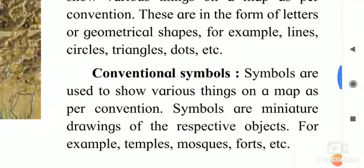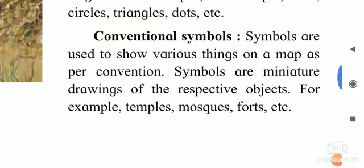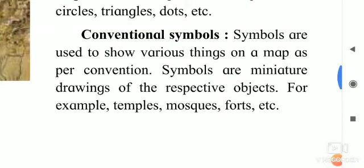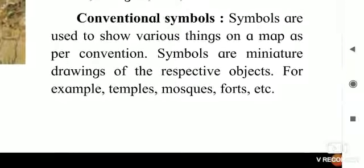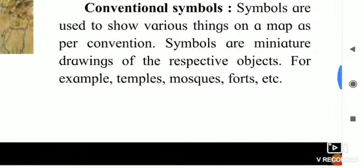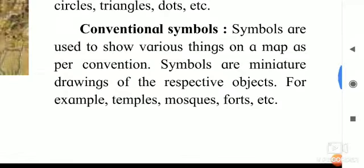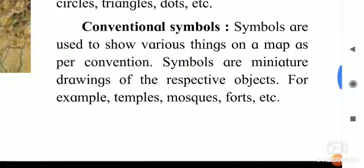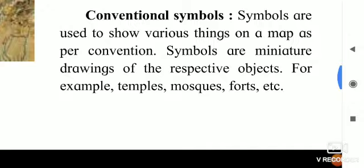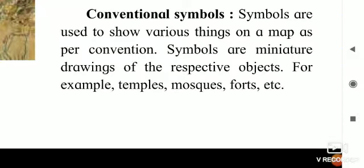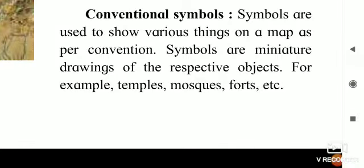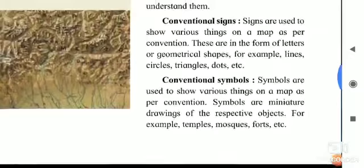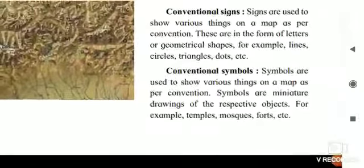Conventional symbols — चिन्ह देखो. Symbols are used to show various things on a map as per convention. Symbols are miniature drawings of the respective object. For example, temples, mosques, forts, etc. Map में अलग-अलग घटक दर्शाने के लिए उपयोग में लाए जाने वाले चिन्ह उन घटकों के चित्ररूपों की छोटी आकृतियाँ होती हैं — जैसे मंदिर, मस्जिद, और किले के लिए. आया समझ में? ठीक है. Thank you dear students.